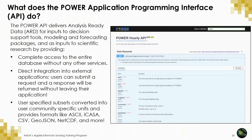What does the POWER Application Programming Interface do? The POWER API delivers analysis-ready data as direct input to decision support tools, modeling and forecasting packages, and scientific research. It provides complete access to our data archive and supports direct integration — you submit a request, and within seconds the data is returned. We've done the work of assembling long time series so when you request one, the response is that time series for immediate use. We provide formats like ASCII, ICASA, CSV, GeoJSON, NetCDF, and more. We recently added the EPW format in the beta.